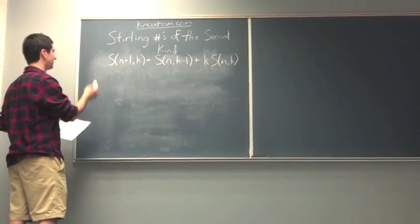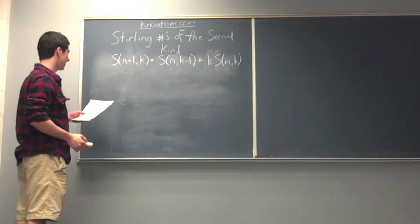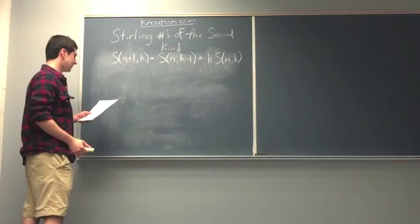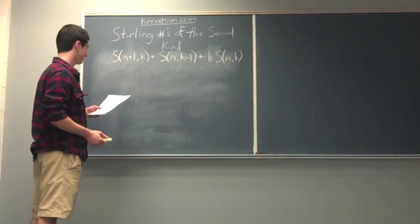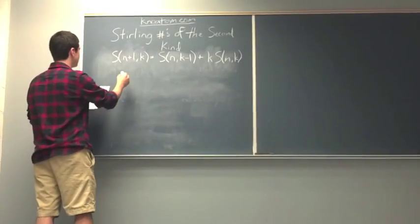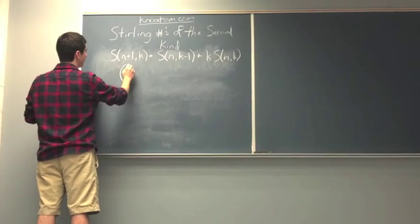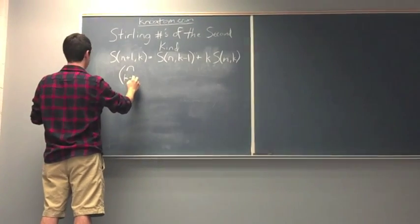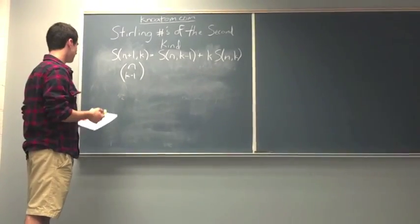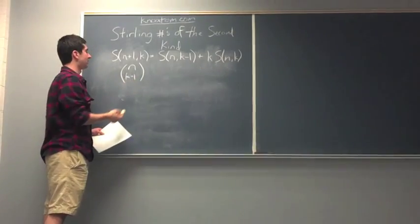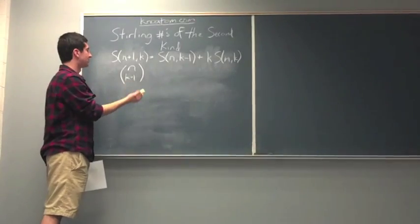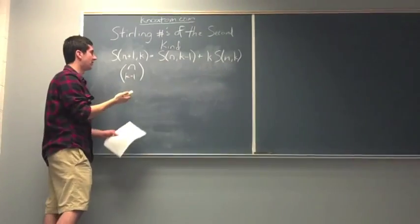So, if we have Stirling numbers of N plus 1, k, a partition of N plus 1 objects is either going to go into k non-empty subsets or it's not. The number of ways that it will go into k non-empty subsets is going to be N, k minus 1. So we have to put the remaining N objects into k minus 1 subsets, because if it contains the N plus 1 set, then there's k minus 1. It's going to take away one k subset.